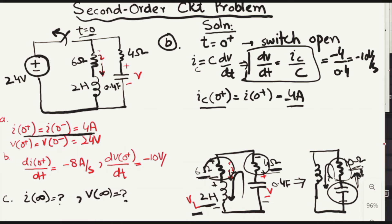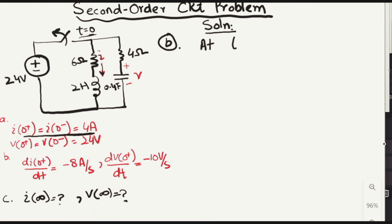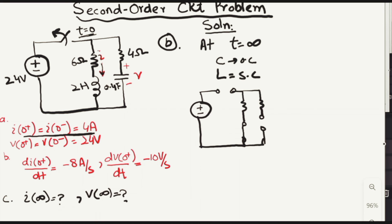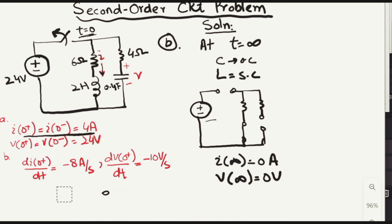We have found dV/dt equals minus 10 volts per second. Now let's move to part C, finding current and voltage as time approaches infinity. When time approaches infinity, steady state is reached: the capacitor is replaced by an open circuit and the inductor by a short circuit. Since the switch is open, there is no closed loop for current to flow, so the current equals 0. And since the current is 0, the voltage is also 0. The final values of current and voltage are both 0.